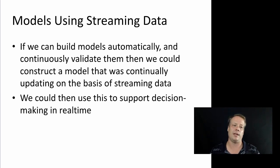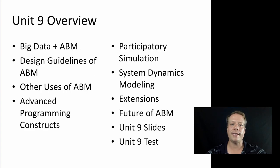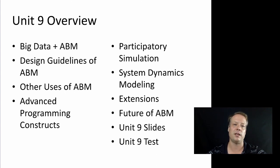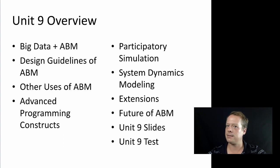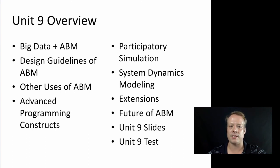So those are three areas critical for the future of agent-based modeling: the use of streaming data, the use of big data to automatically create rules, and improvements in validation and calibration. In Unit 9 we talked about big data and ABM, design guidelines, uses of ABM in communication and education, advanced programming constructs like map, reduce, run, and run-resolved tasks, participatory simulation, systems dynamic modeling, and the extensions and future of agent-based modeling. I want to thank everyone for participating in this course — I've really enjoyed teaching it and the discussions on the forums and YouTube office hours. I hope you gained something from this, and please stay in touch as you go forward and use agent-based modeling in your own work.